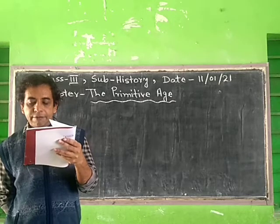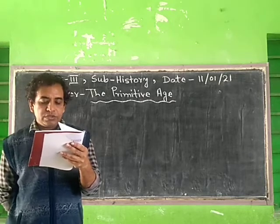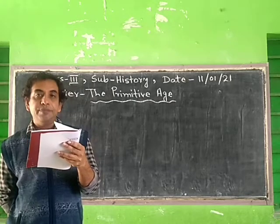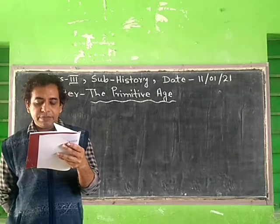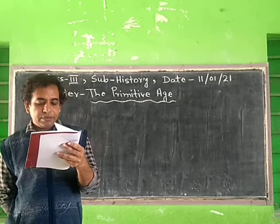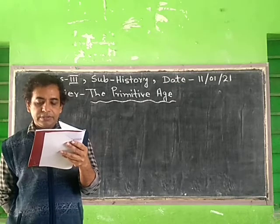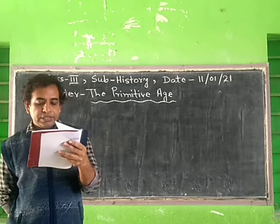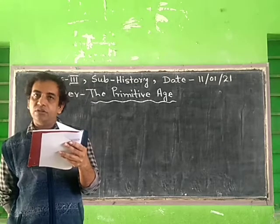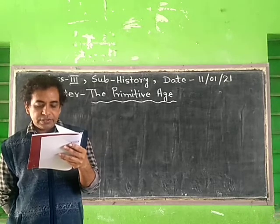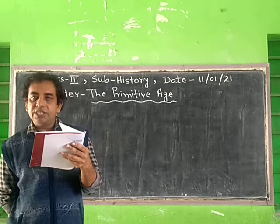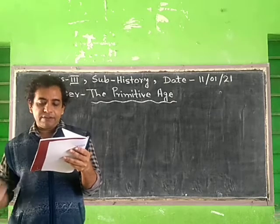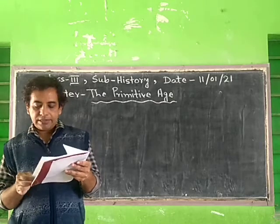Primitive men evolved from them. Their noses were broad, their bodies were hairy, and they had big heads. They were the primitive men of the ancient age. Primitive men lived like wild animals. Their food was fruits and roots of the trees. They also used to eat the flesh of animals. They lived in caves, and sometimes on the branches of trees. They could not speak; they expressed their feelings with sounds and gestures.